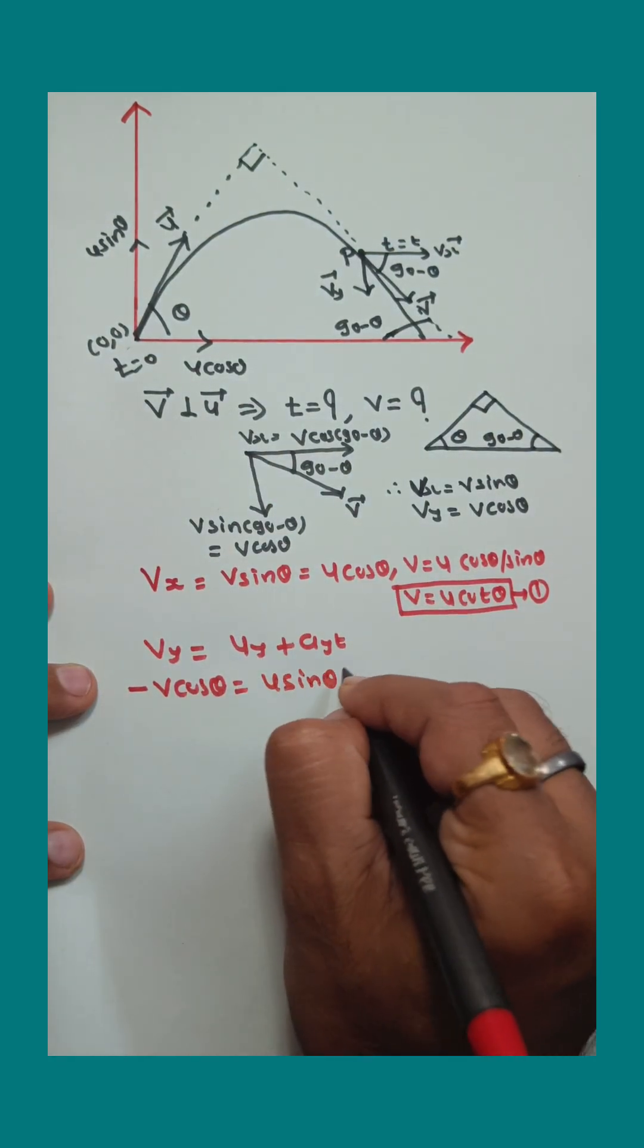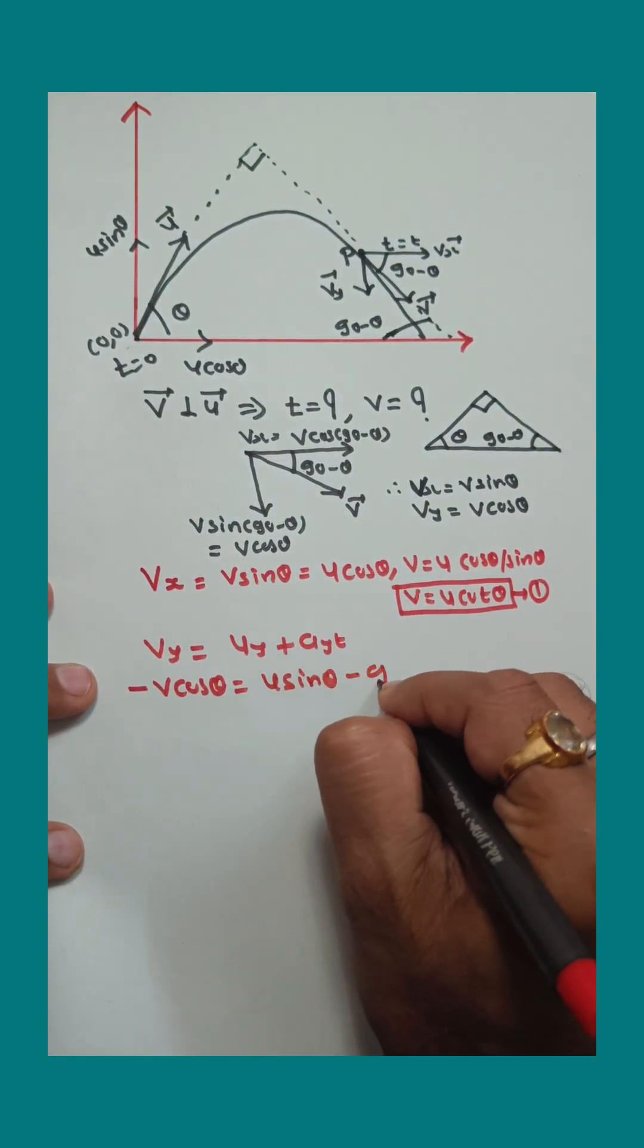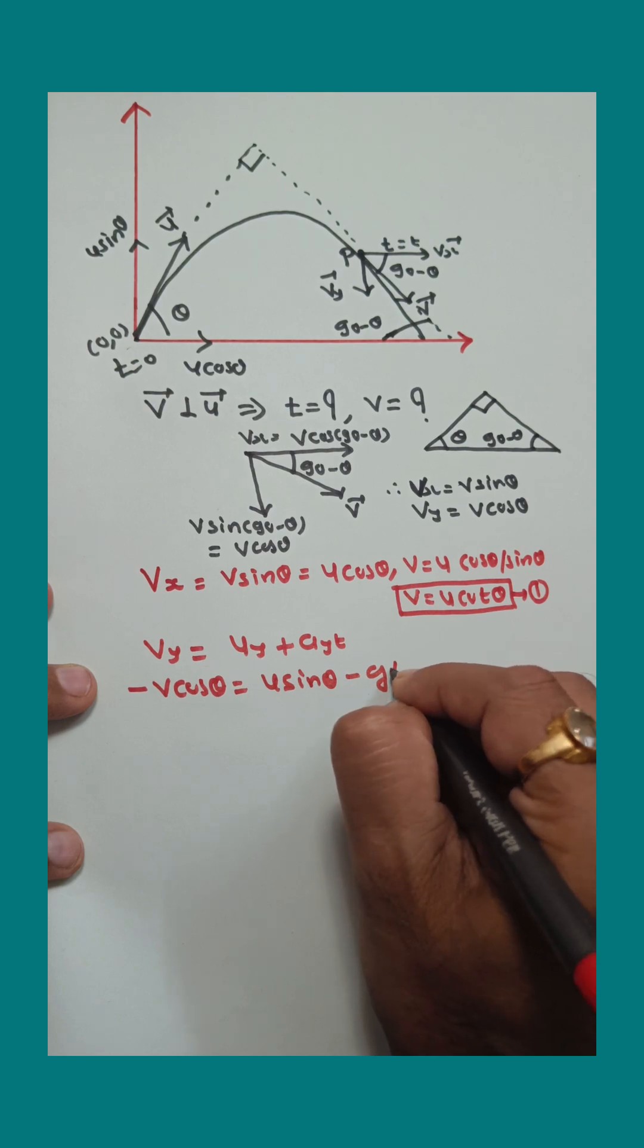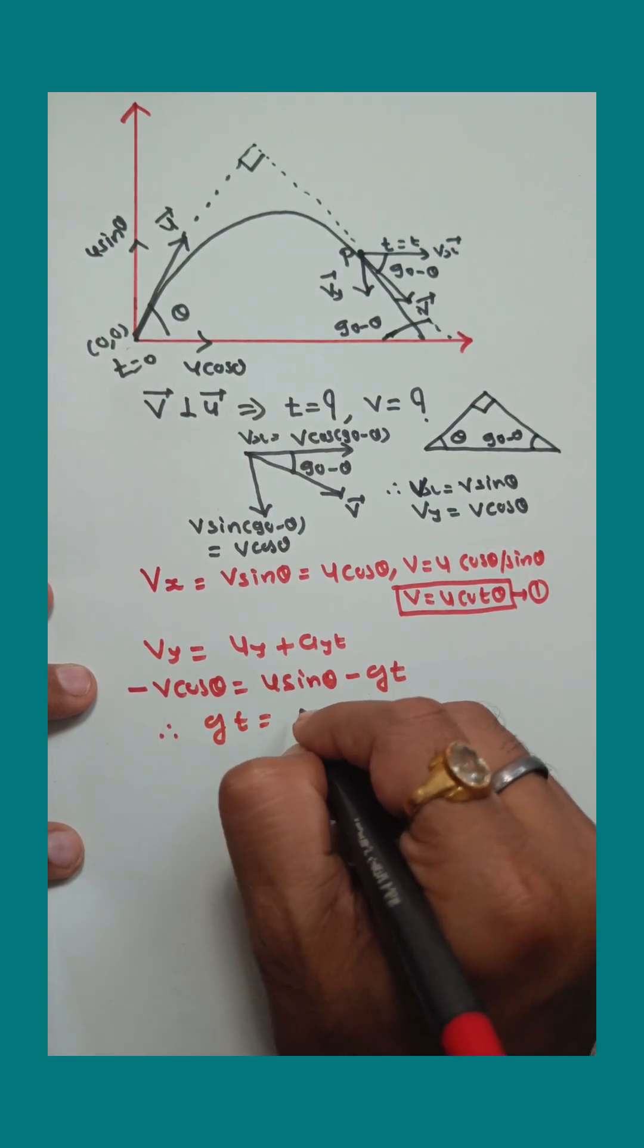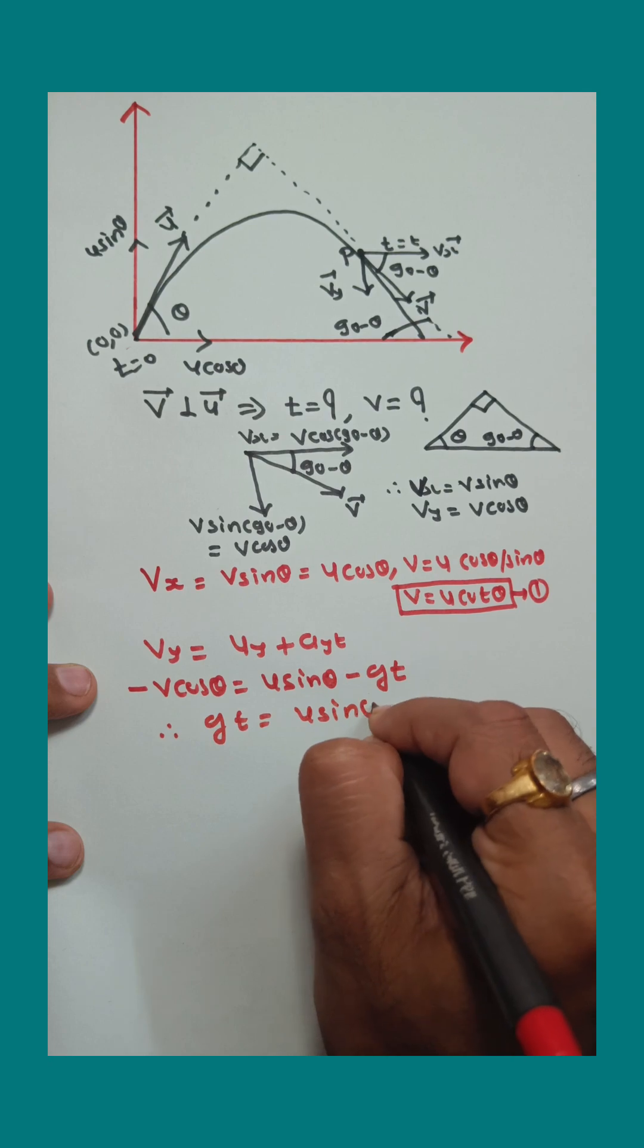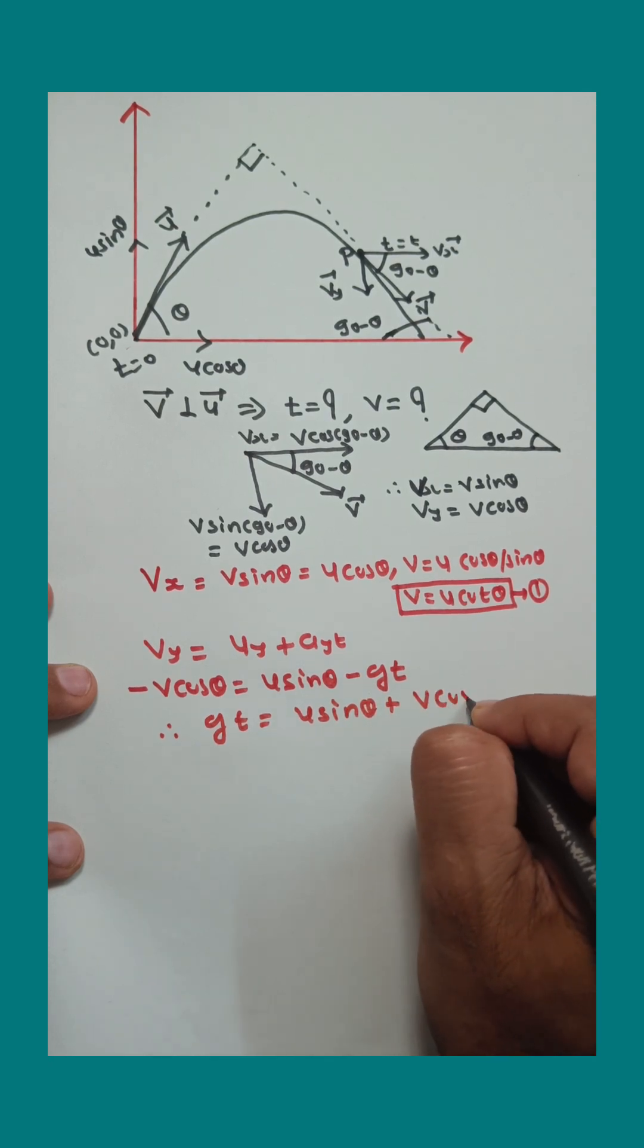In projectile motion, ay is always minus g, so minus g into t. Now from this, gt equals u sin theta plus v cos theta.